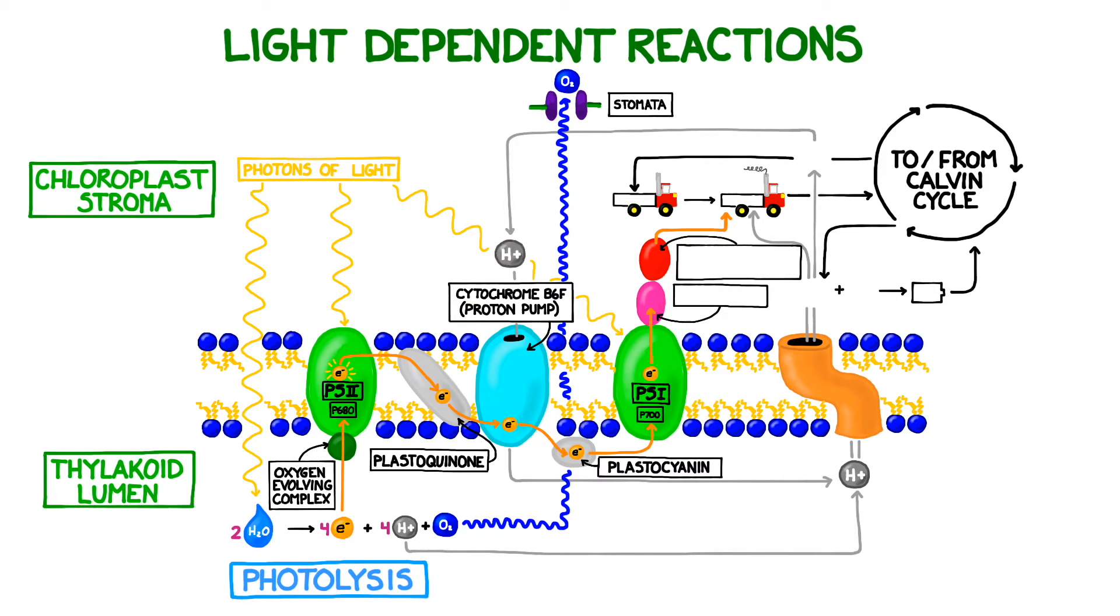Cytochrome b6f is unique among these electron transport proteins because it's a proton pump, not just a conveyor belt. When energized by the electron, cytochrome b6f sucks a proton out of the stroma and into the thylakoids. This creates a powerful concentration gradient, but since the pump only works one way, the proton can't reverse course and return to the stroma.